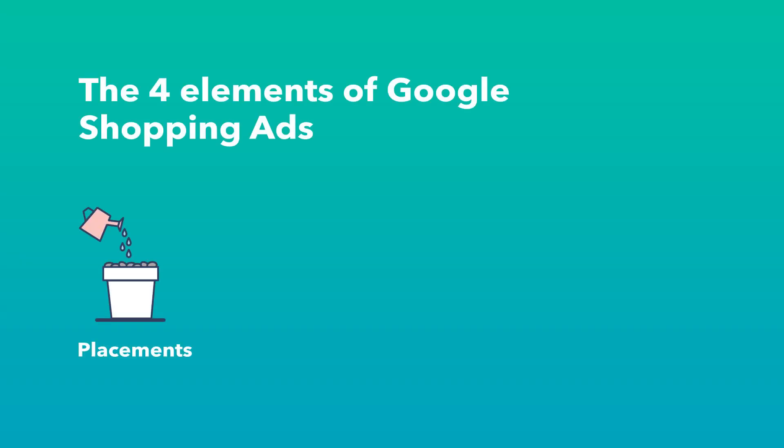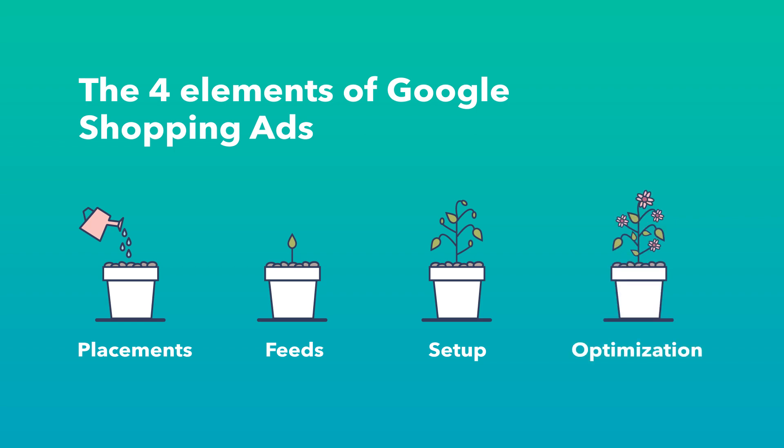There you have it. Kirk just covered the four elements of Google Shopping ads: placements, feeds, setup, and optimization. Do you want to learn how to use Google Shopping ads as part of your greater paid media strategy? Be sure to check out our new paid media course from HubSpot Academy that covers how to plan, buy, and optimize your campaigns to bring return on your investment. Just click the link in the description. Thanks for watching, and I'll see you there.